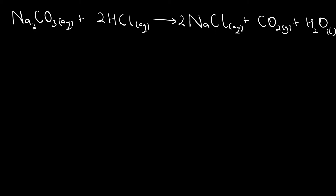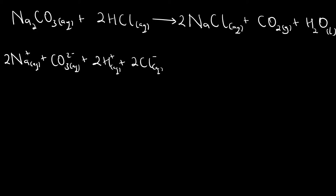For sodium carbonate, we have 2 sodium ions and 1 carbonate ion, both aqueous. From hydrochloric acid, we have 2 hydrogen ions aqueous plus 2 chloride ions aqueous. On the products side, sodium chloride is also aqueous, giving 2 sodium ions plus 2 chloride ions. Carbon dioxide gas and water are not in aqueous form, so they remain as molecules — this is the overall ionic equation.